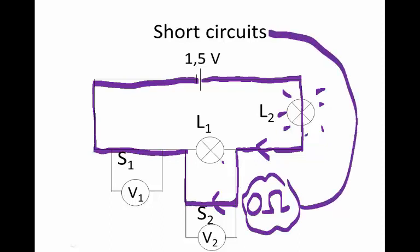So in this case, it's not a short circuit across the cell — it's not going to make the cell flat like we saw before. It's a short circuit across this bulb, L1. And so it causes L1 to be bypassed, short circuited, not included in the circuit. And so L1 will not shine in this case.